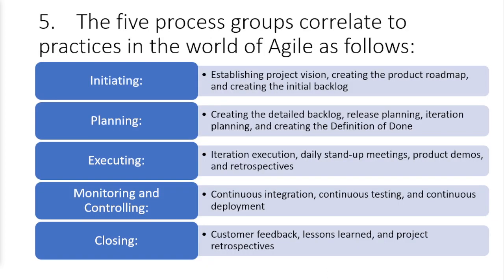Question five: correlate Agile practices to the five process groups. Initiating is like the vision — covered on pages 49 and 50 of the Agile Practice Guide. Planning spans the backlog, release planning, iteration planning, and creating the definition of done. Executing covers daily stand-up meetings, product demos, and retrospectives where the team gets work done. Monitoring and controlling maps to continuous integration, continuous testing, and continuous deployment. Closing involves customer feedback and lessons learned, done iteration by iteration — at the end of every sprint, not as a big bang at the end.